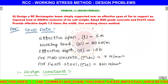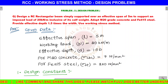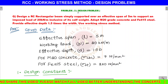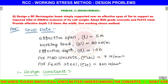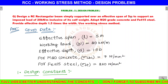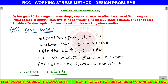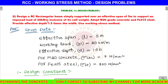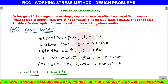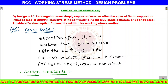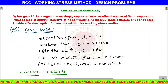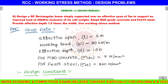Hello guys, welcome back to Civil Knowledge YouTube channel. In our RCC lecture series on working stress method, we have problem number 5 - a design problem. Design an RC rectangular beam simply supported over an effective span of 5 meters, to support an imposed load of 20 kN per meter inclusive of self weight. Adopt M20 grade concrete and Fe415 steel.